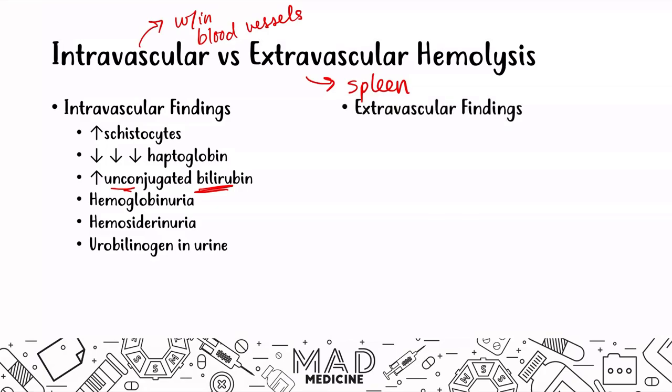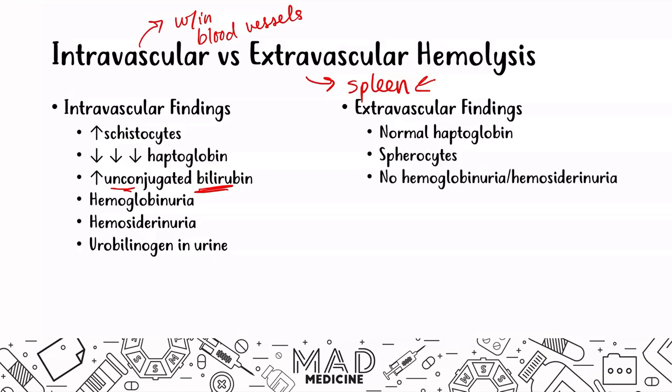In extravascular hemolysis, keep in mind this is happening in the spleen, and you're going to have normal haptoglobin levels because the spleen takes care of everything. You're going to see no hemoglobin going into circulation and therefore normal haptoglobin levels. You are going to see spherocytes, and you're not going to have hemoglobinuria or hemosiderinuria because no hemoglobin is actually being released into circulation. You will also not see an increase in unconjugated bilirubin. What you will see is urobilinogen in the urine, because the heme is still being removed one way or another.